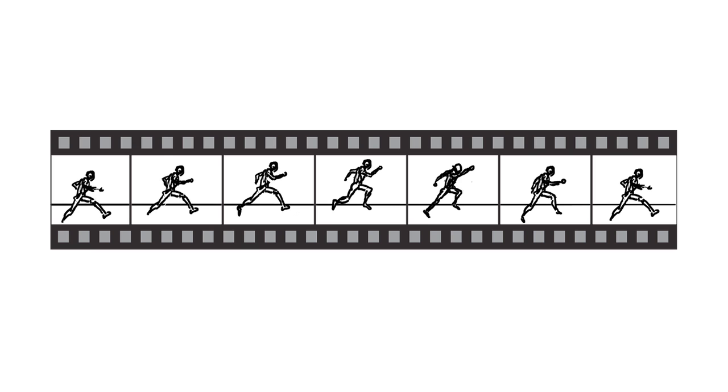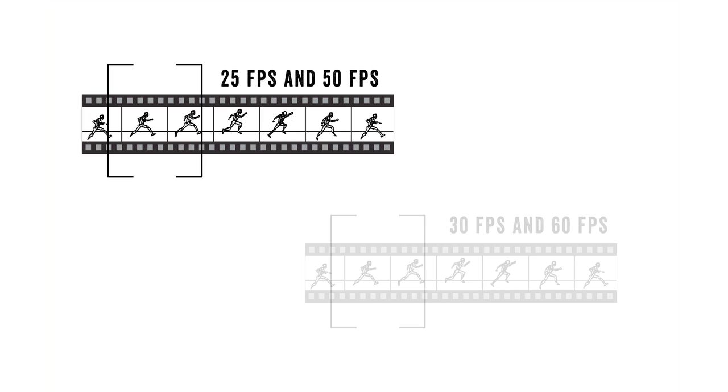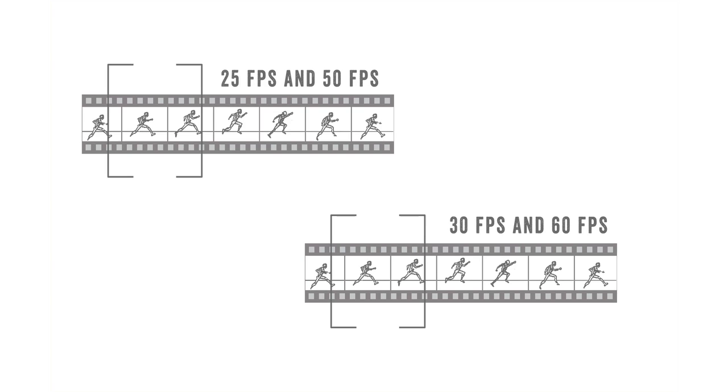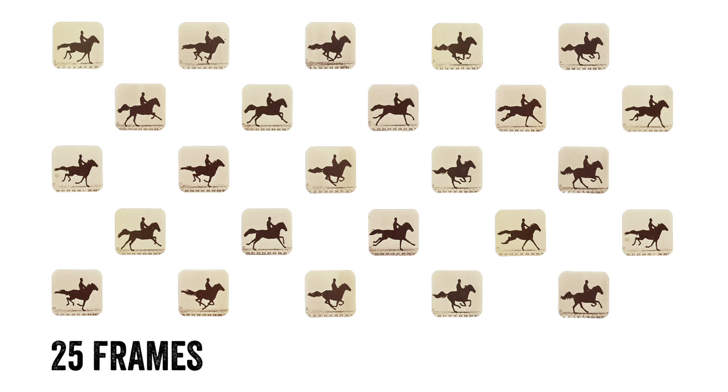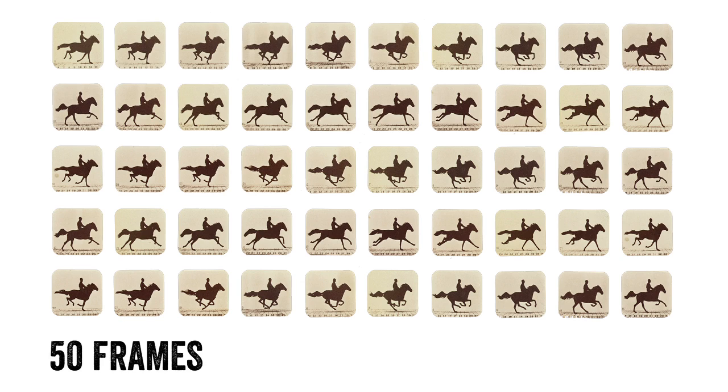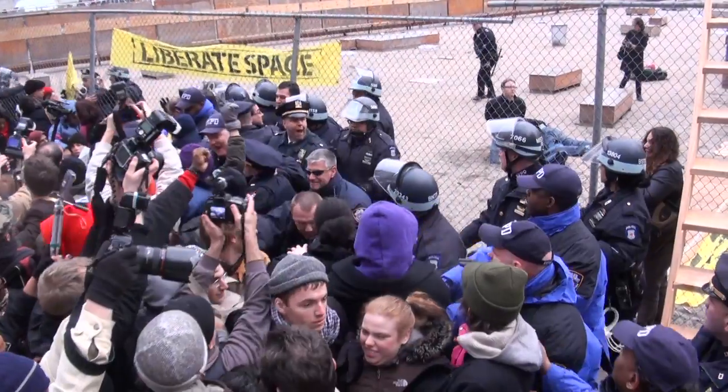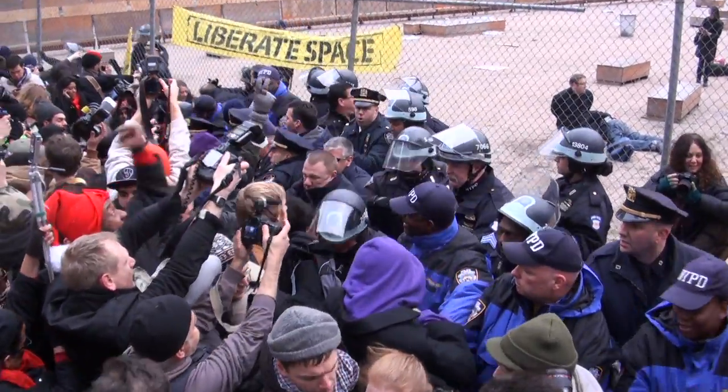Frame rate is another important characteristic of video. It is the number of video frames that the camera records every second. Some common frame rates are 25 and 50 frames per second, or 30 and 60 frames per second, depending on your country. A higher frame rate means that you capture more video in a given period of time. It can be advantageous when filming fast action because you capture more of the motion. This can allow you, for example, to see more details in the motion when you play a video back at a slower speed. A higher frame rate might be useful when documenting events for evidence, but keep in mind that it contributes to a larger file size.